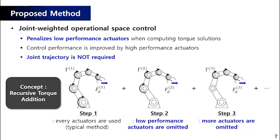In this paper, we have developed a joint-weighted operational space control method. It penalizes low-performance actuators when computing torque solutions and control performance is improved by high-performance actuators. The difference from other approaches is that the method does not require joint trajectory. The main concept is recursive torque addition through several steps as shown below.